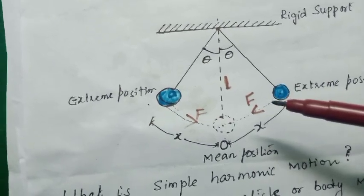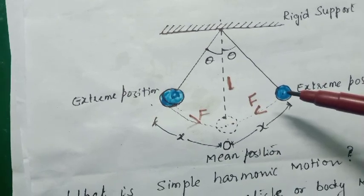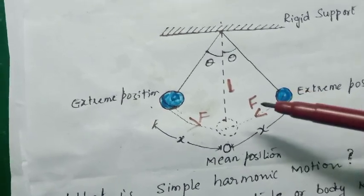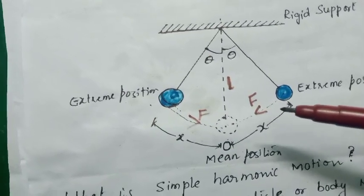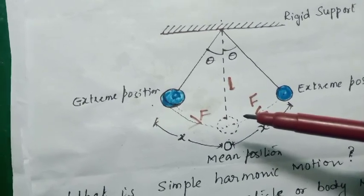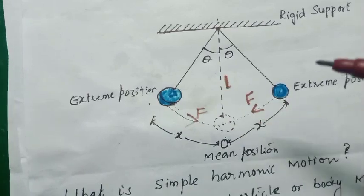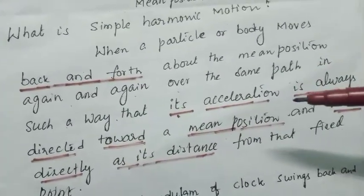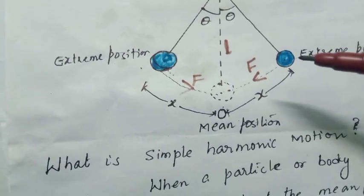When we displace this bob to a distance x, a restoring force is produced in the body. The restoring force tries to bring the body towards the mean position — that is, the force F is always acting towards the mean position in both extreme positions. The main important point in this definition is that the acceleration of the body is directly proportional to its distance from the fixed point. That is, the more you displace the bob from the mean position, the more will be the acceleration, and that acceleration is directed towards the mean position.